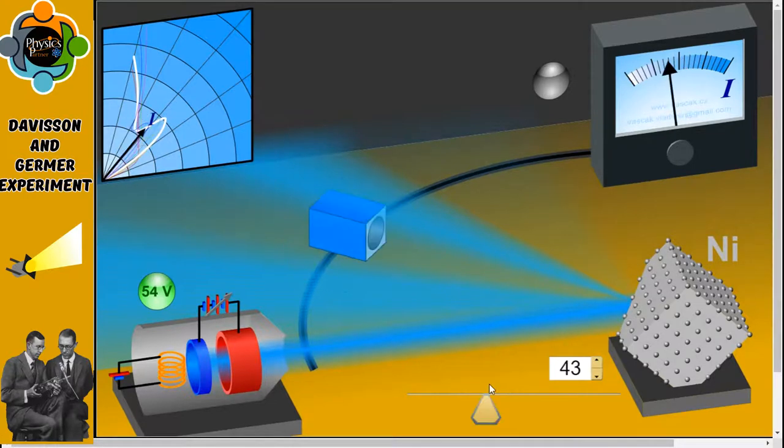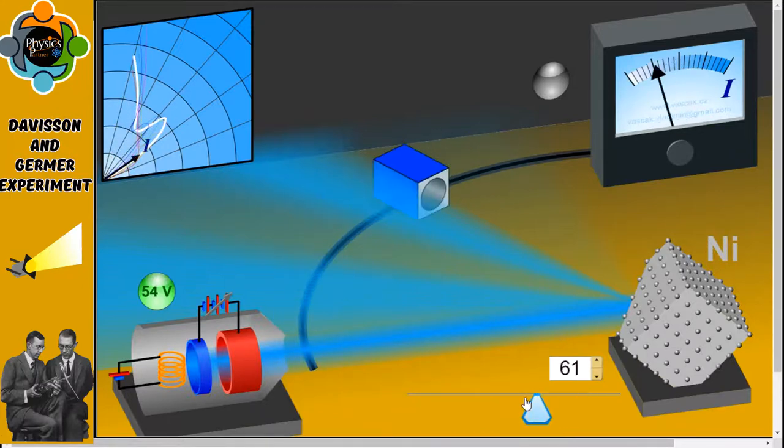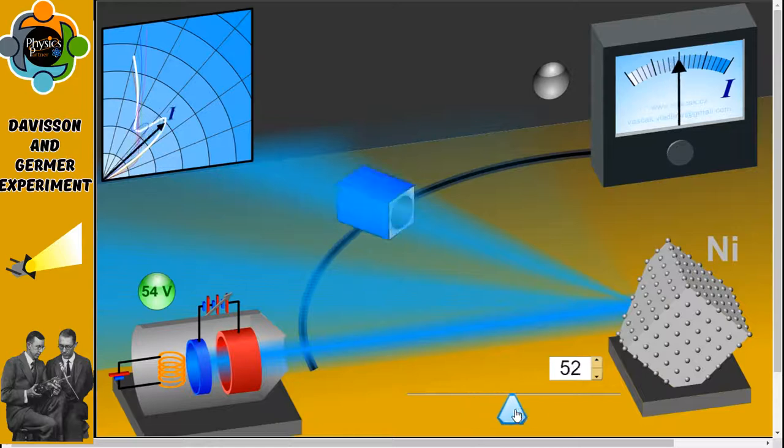The intensity of the scattered electron beam is measured for different values of the scattering angle. We can start from, let's say, 15 degrees. As you can see here, we'll use theta for the angle between the incident and the scattered electron beams. This is the incident beam and this one is the scattered beam. By moving the detector to different positions on a circular scale, you can find out the different intensities of the scattered electron beam.